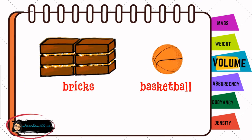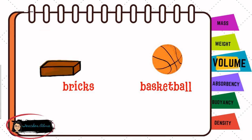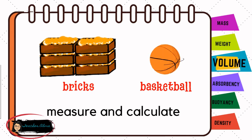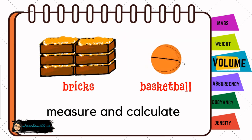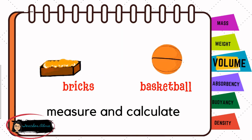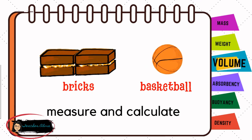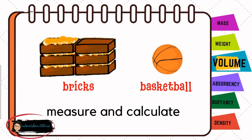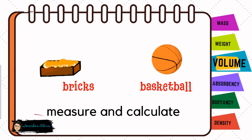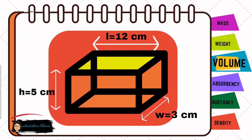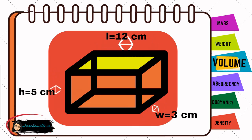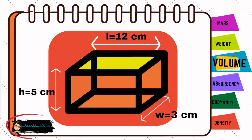There are different ways to find the volume of an object. For objects that have well-defined shapes, such as a brick or a ball, you can take a few measurements of the object and calculate the volume. A rectangular box, for example, has a length, a width, and a height that can be measured.